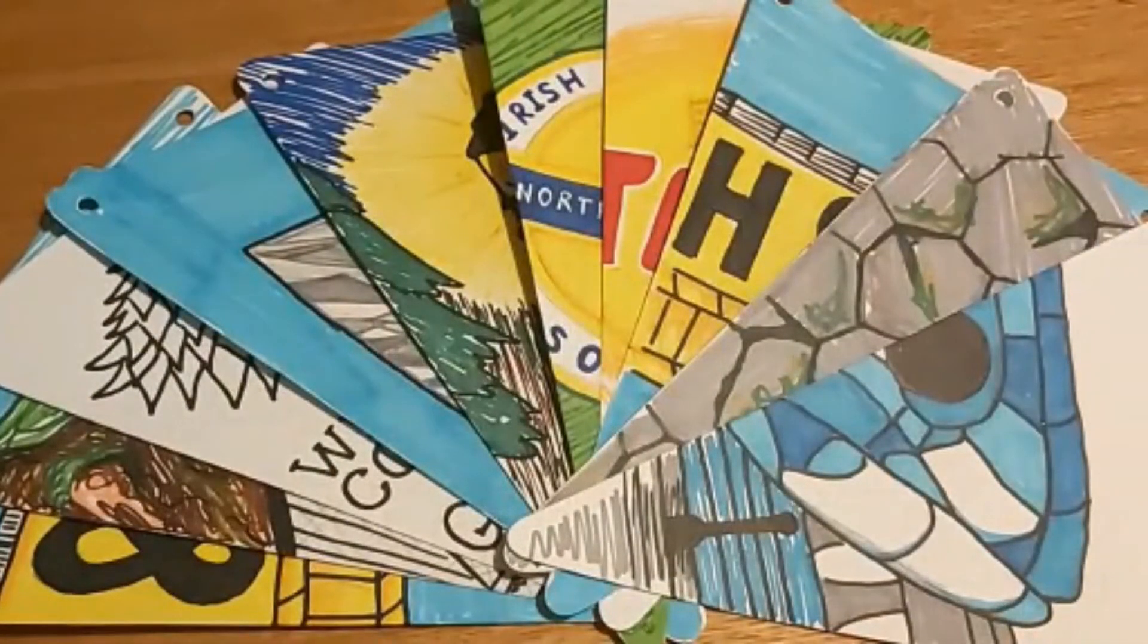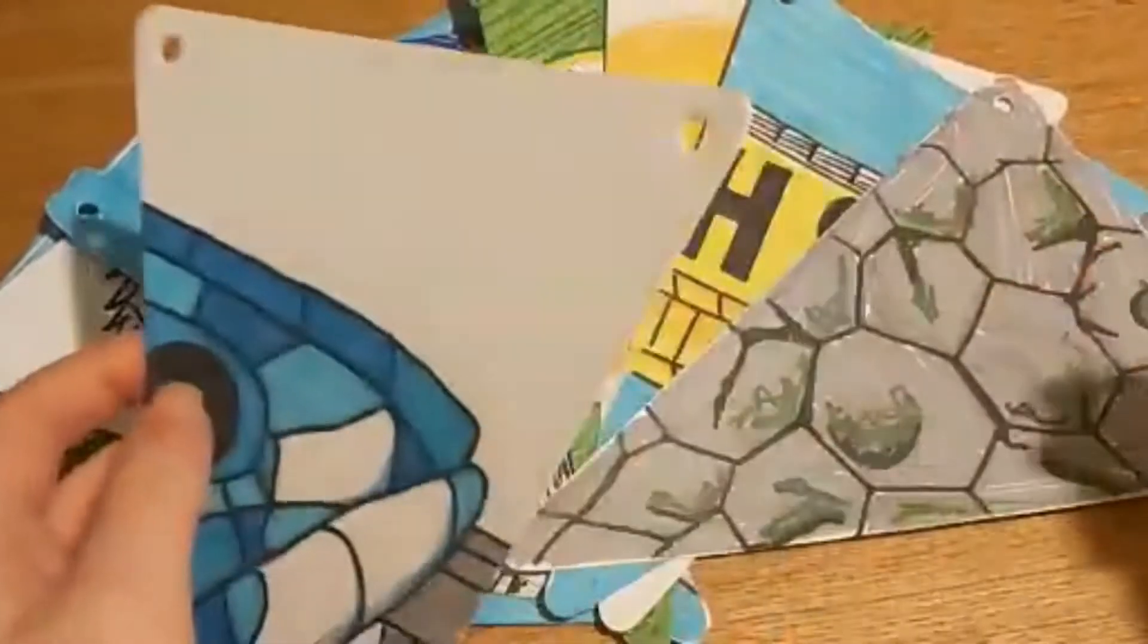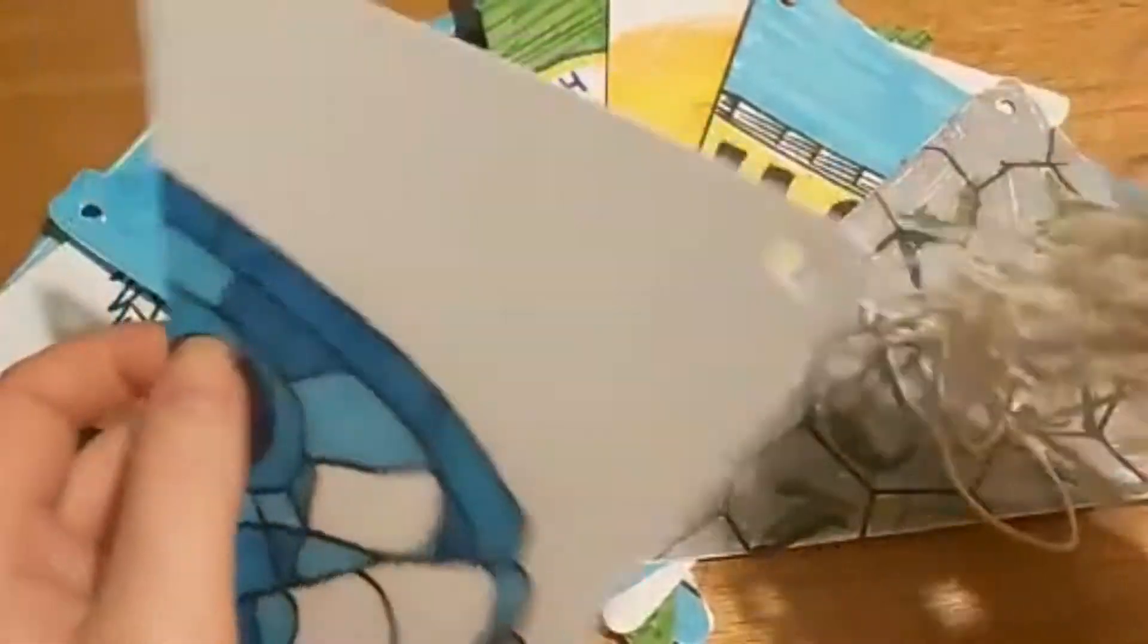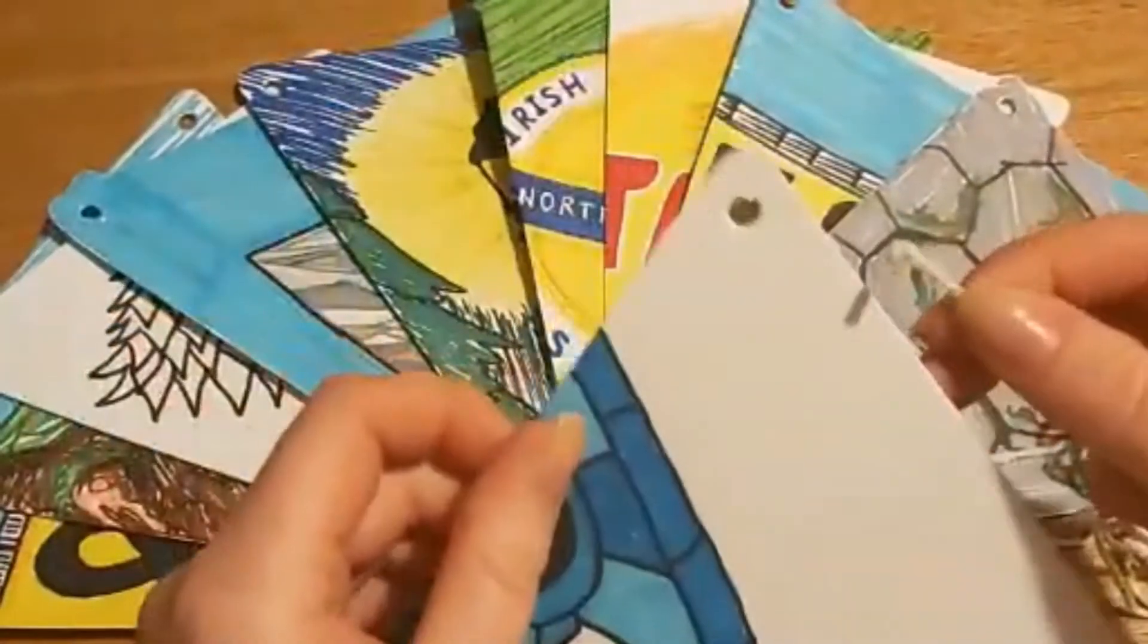So there we have it, I've got all 10 of my finished buntings and now I'm going to show you how to stick them on. So we're going to grab the first one and we're going to grab our string and we're going to start here and make our way round.